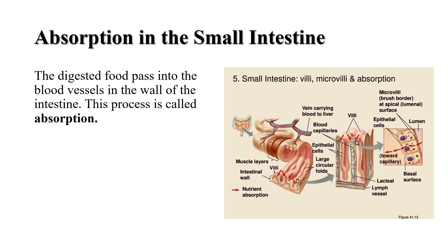Can you guess what the role of villi could be in the intestine? The villi increase the surface area for absorption of the digested food. Each villus has a network of thin and small blood vessels close to its surface. The surface of villi absorbs the digested food materials. The absorbed substances are transported via blood vessels to different organs of the body where they are used to build complex substances such as the proteins required by the body. This is called assimilation. In the cells, glucose breaks down with the help of oxygen into carbon dioxide and water, and energy is released.